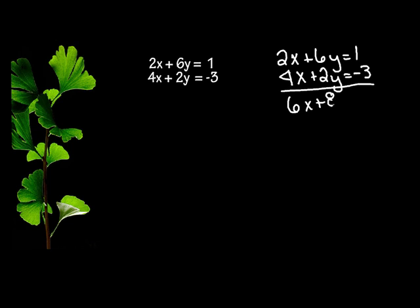I get 6x plus 8y equals negative 2. Do you notice that I don't get a 0x or a 0y? So that means I need to either multiply the top by something or the bottom by something or both of them. So that when I do add down, I get a 0x or a 0y. So let's see how I'm going to do that.